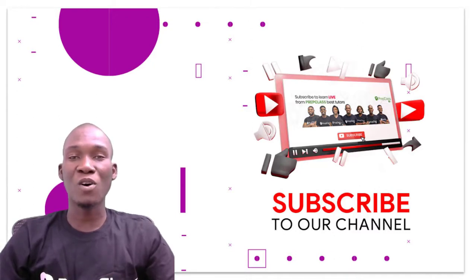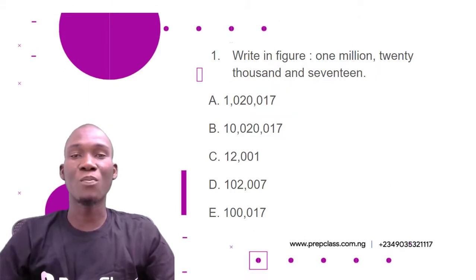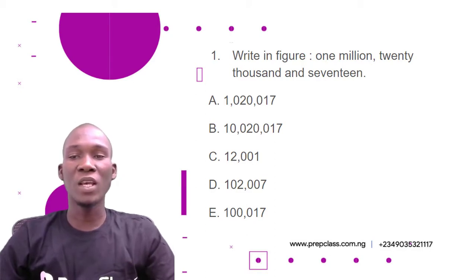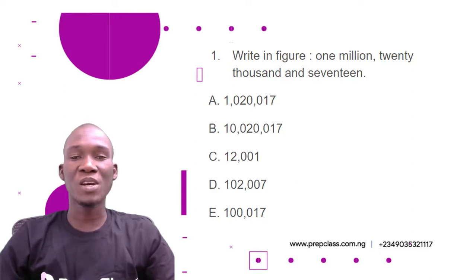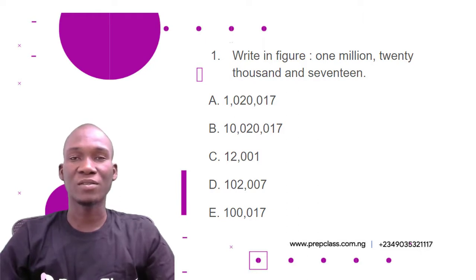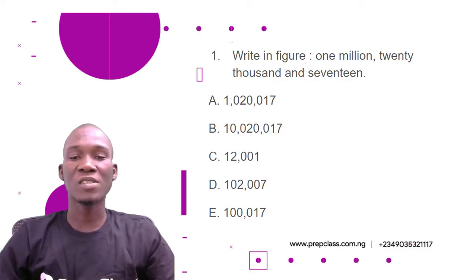Now let's start our solving for today. We start with question number one: write in figures 'one million twenty thousand and seventeen.' The options are: A) 1,020,017; B) 10,020,017; C) 12,001; D) 1,020,007; and E) 100,017.